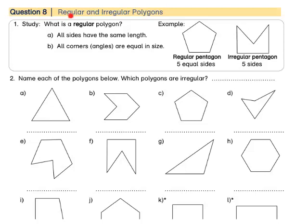Question 8: Regular and irregular polygons. Let's study. What is a regular polygon? In a regular polygon, all the sides have the same length.